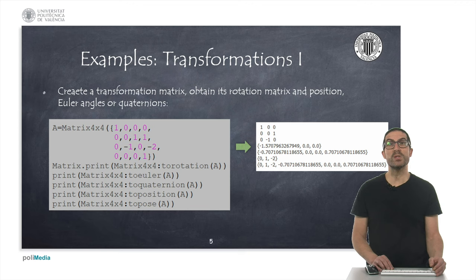We can also access the position vector and also the pose, which is just a combination of the position and the orientation expressed in quaternions. In that case also, these two last functions also return a LUA table, as you can see.